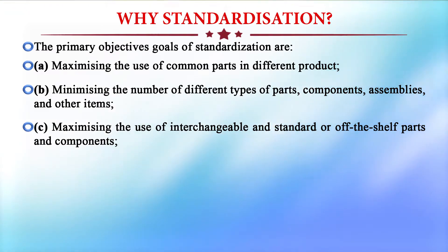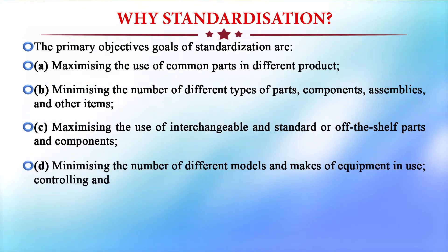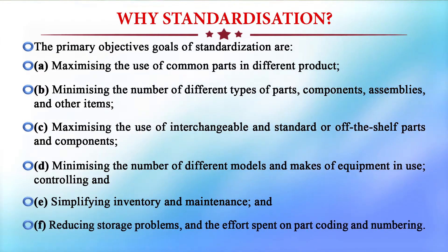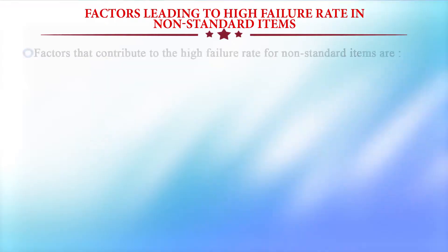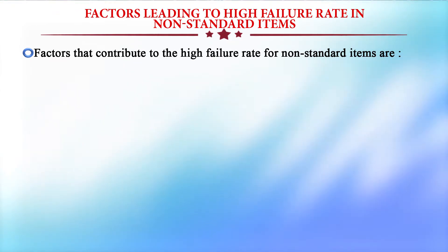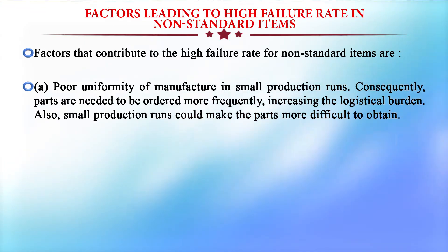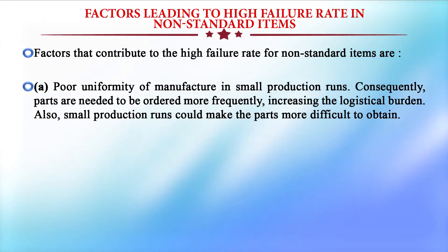Standardization can help by standardizing products and processes, minimizing the number of different models and makes of equipment in use, controlling and simplifying inventory and maintenance, and reducing storage problems and the efforts spent on part coding and numbering. The factors leading to a high failure rate in non-standard items include poor uniformity of manufacture in small production runs, and consequently parts need to be ordered more frequently, increasing the logistics burden. Small production runs could also make parts more difficult to obtain.